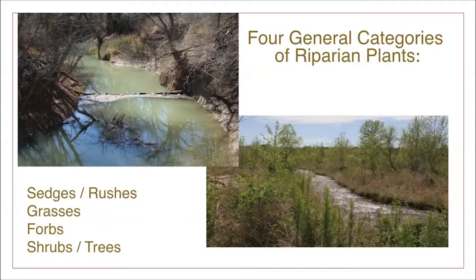Riparian vegetation can be grouped into four categories: sedges and rushes, grasses, forbs, and shrubs and trees. All are good. Some rivers have more herbaceous plants and some have more woody plants. It is generally unwise to manage for one category over another, at least not when you are concerned with riparian function and the values generated by functional riparian areas.